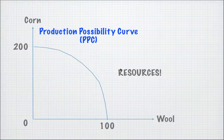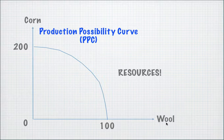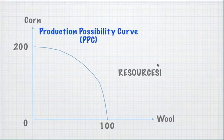Let's look at an example of a production possibility curve. It's a very simple diagram — you have the y-axis which is corn and the x-axis which is wool, or it can be any two goods really, and the units are quantities of corn and quantity of wool. What the production possibility diagram depicts is basically the different combinations of these two goods that a country can produce given its amount of resources.